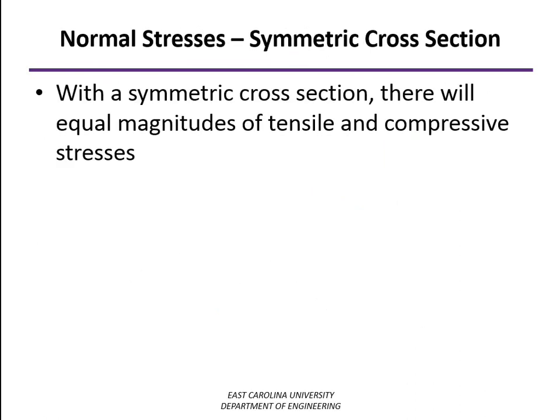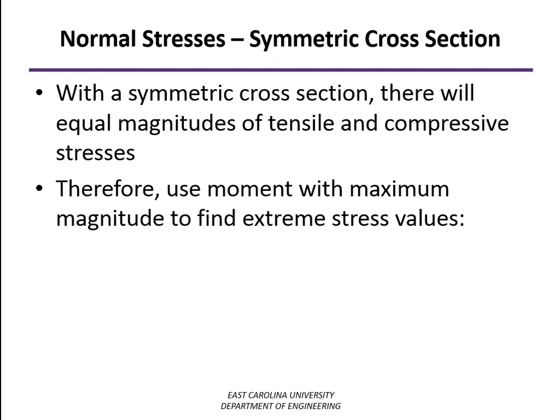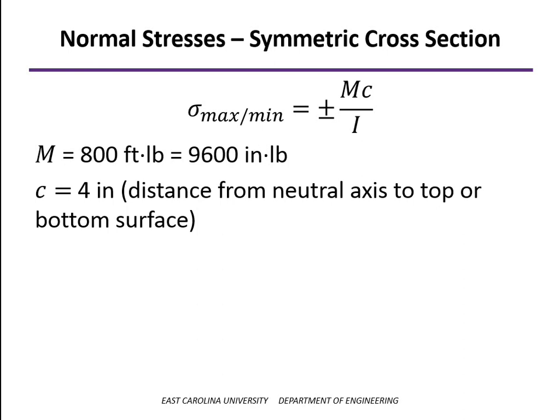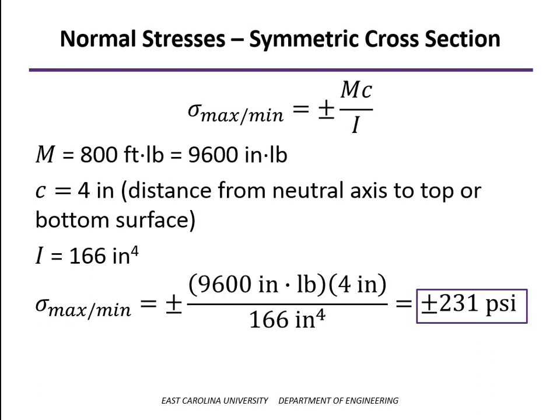We have a symmetric cross-section, which means tension and compression are equal magnitudes at any location. So we don't really care whether the moment is positive or negative — we just want to take the moment with the highest magnitude to find the extreme stresses. We use the equation plus or minus MC over I to calculate the stress values. In our case, we use the moment of 800 foot-pounds as the maximum magnitude — converting to inch-pounds. The c-value is the distance from the neutral axis to the extreme surface, which is 4 inches since it's symmetric. Plugging in gives a value of 231 psi.